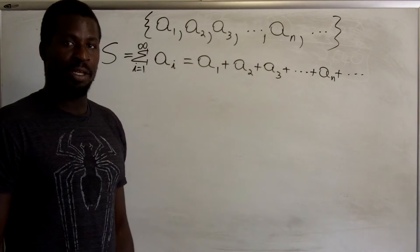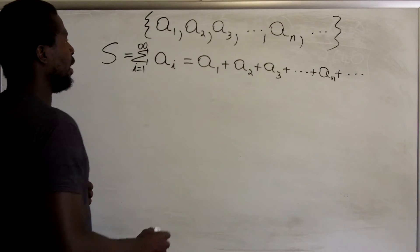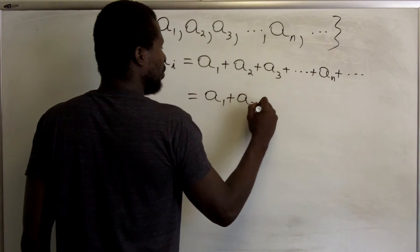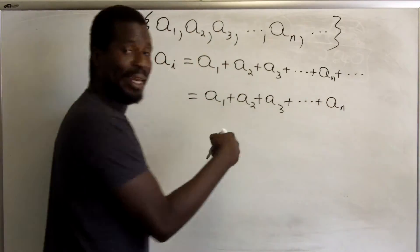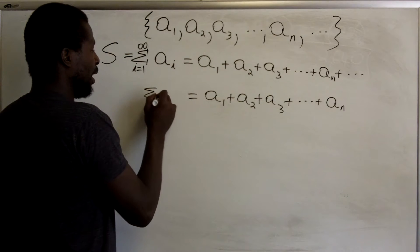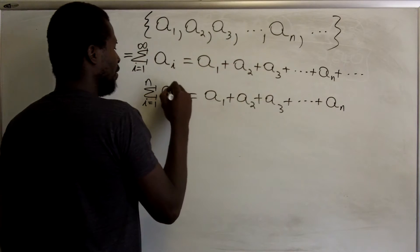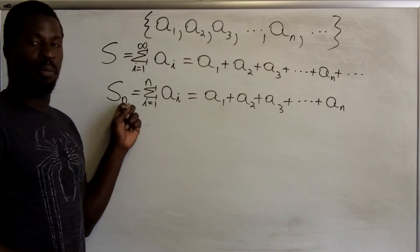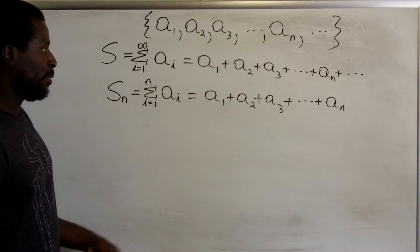If you take the terms of a sequence and add them all up, you get the infinite series. If instead you truncate it — stop at a_n and don't add any more — the notation becomes the sum from i equals 1 to n of a_i. This is called S_n, the nth partial sum. So if it's a finite sum that stops at n, you call it the nth partial sum.